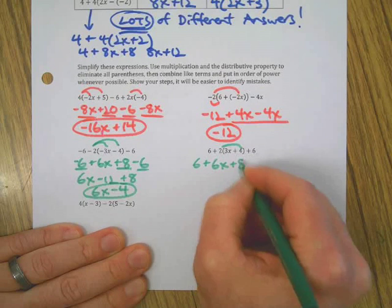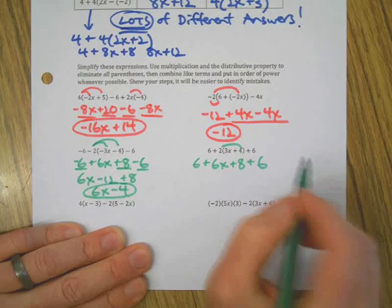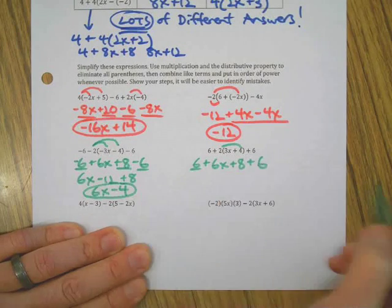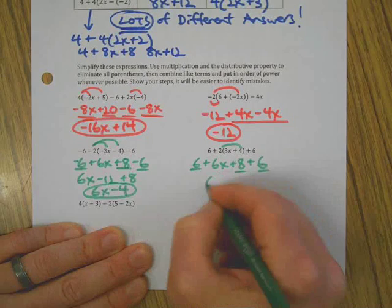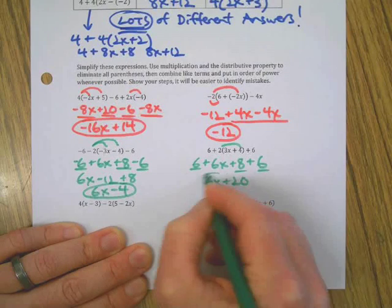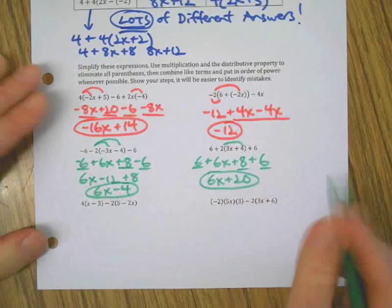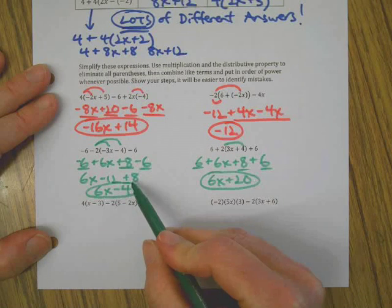6 plus 6x, and then there's another 8 and there's another 6. That looks a whole lot like the last problem, doesn't it, except they're all positives. 6, 12, 20. Here's something to think about: did you think this one was way easier than this one? Why do you think that is, or were they the same? Interesting.